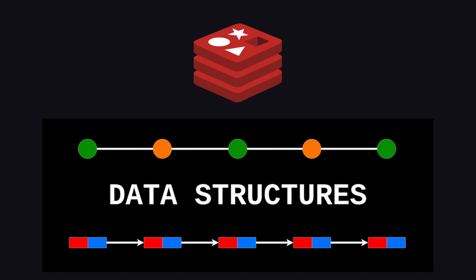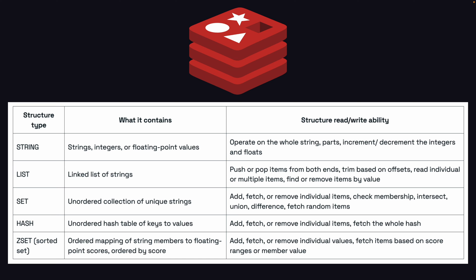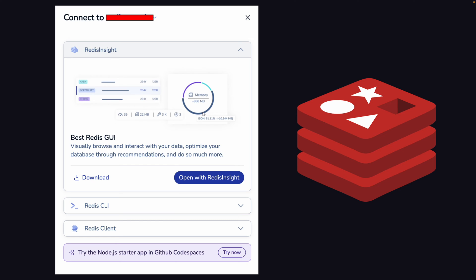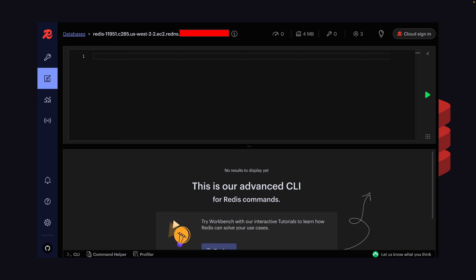In this video we're going to take a look at some common data structures in Redis like string, list, set, hashes, sorted set. We're also going to look at how we can set expiration on keys, which is a very important feature in Redis to keep our data and cache up to date. For this tutorial we're going to use Redis Insight for demonstration, but you can also follow along using the Redis CLI.